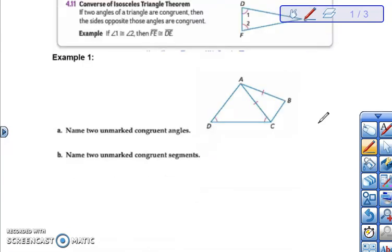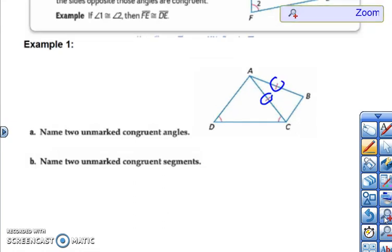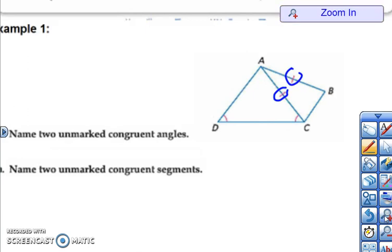And here's how we can use as an example. We need to name two unmarked congruent angles. If we look at our picture they have given us two congruent sides. If we have two congruent sides in our triangle we must have congruent angles.